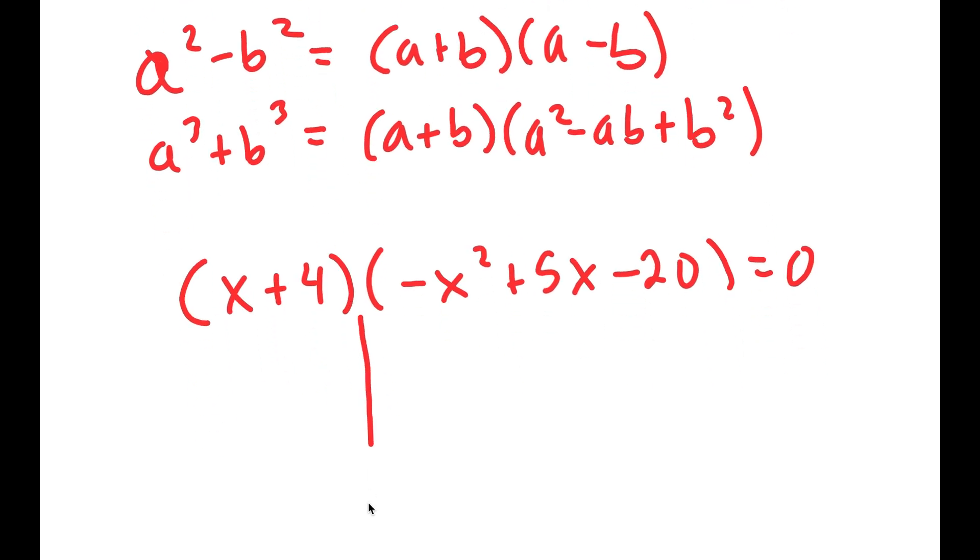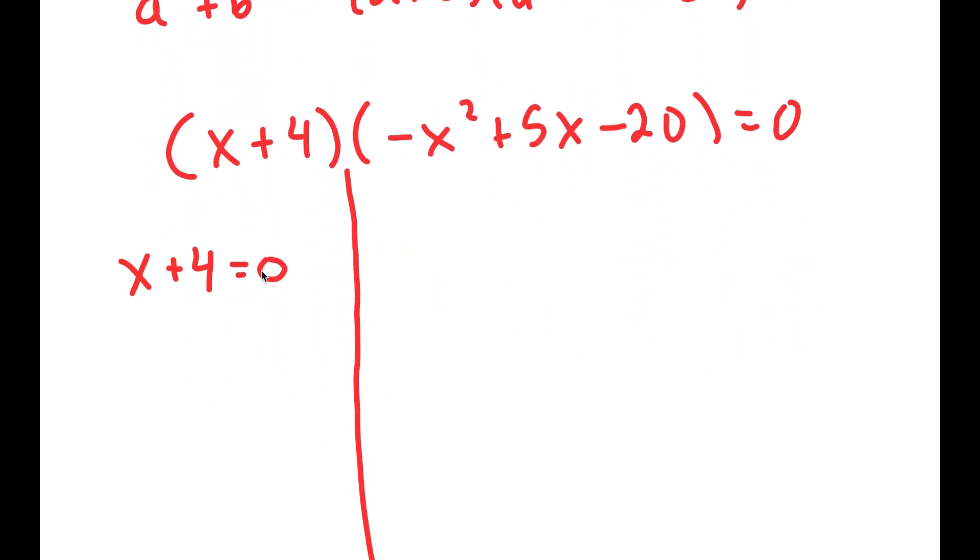Meaning I get two equations from this: x + 4 = 0 meaning x = -4. So this is one solution.